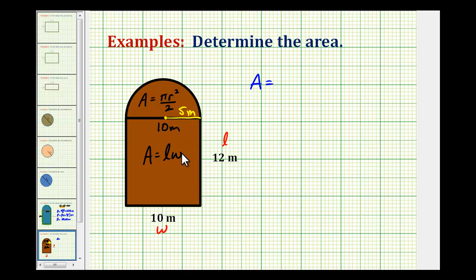So the area will be the area of this rectangle, which will be 12 meters times 10 meters. We'll leave off the units until the end.